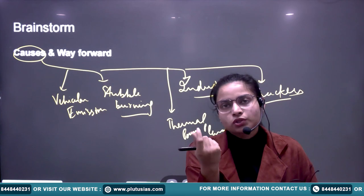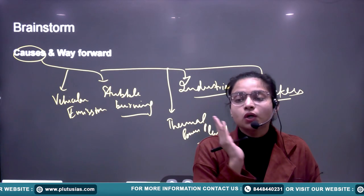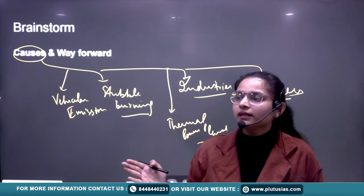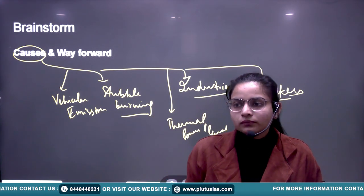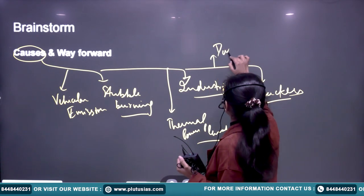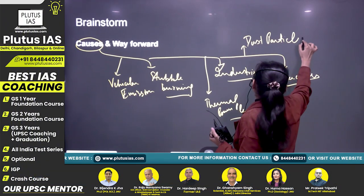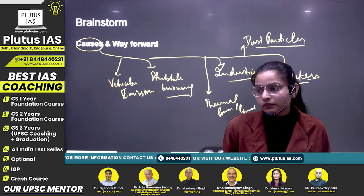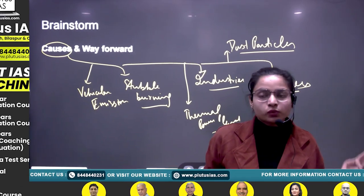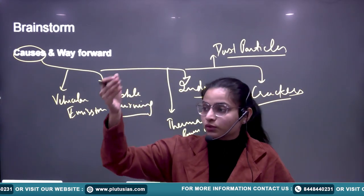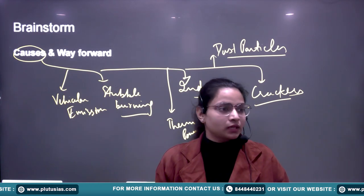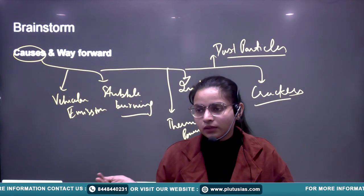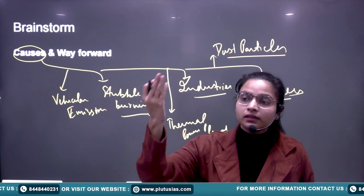I was discussing: what are the causes of air pollution — not specifically Delhi, but any city. These dust particles can be because of the construction sector. That's why in Delhi, whenever there is a GRAP stage one, two, three, four, they basically change the timing of construction activities and ask them to cover construction material, because these dust particles create pollution.